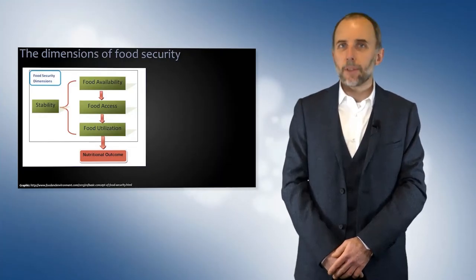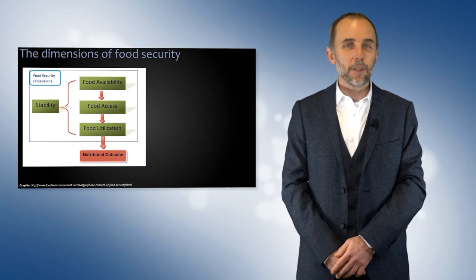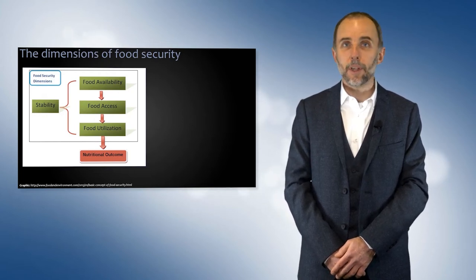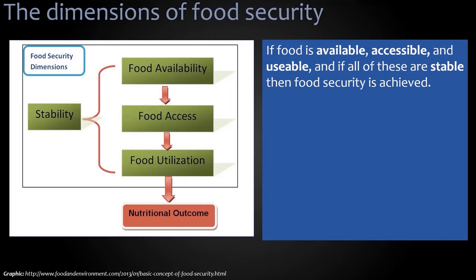We can unpack that definition and see that it has multiple dimensions and components. If our food is available — meaning it's available in sufficient quantities — if it's accessible, meaning that we can get to markets or farmers can access the fertilizers and seeds that they need, and also that it's economically accessible and affordable, and if it's usable, meaning it's something that we wish to eat and it meets our preferences and cultural expectations, and if all of those things can be met day after day, season after season, year after year so they're stable —